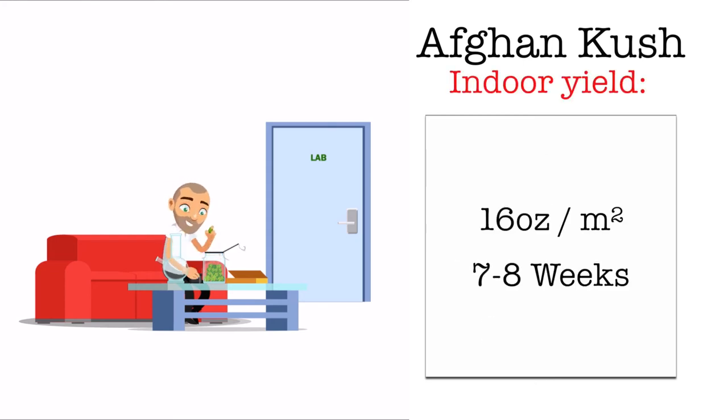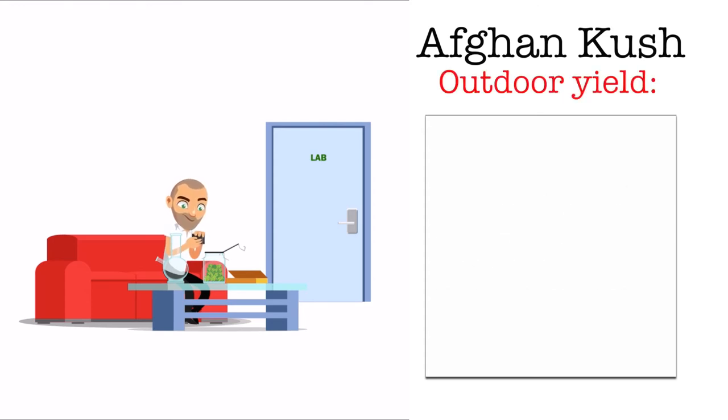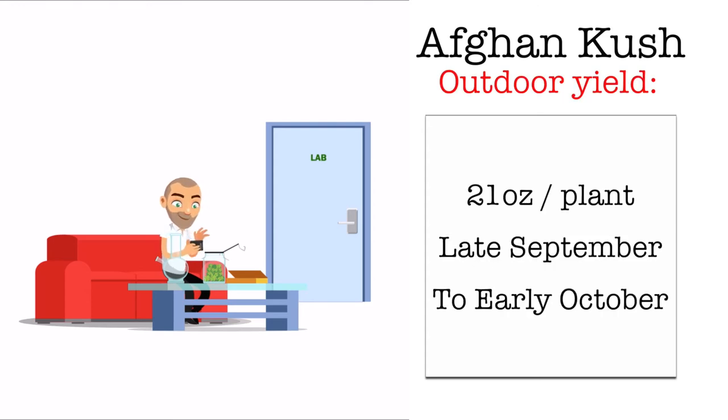Its indoor yield can be up to 16 ounces per square meter with an average flowering time of 7 to 8 weeks. Its outdoor yield can be up to 21 ounces per plant and is available for harvest in late September to early October.